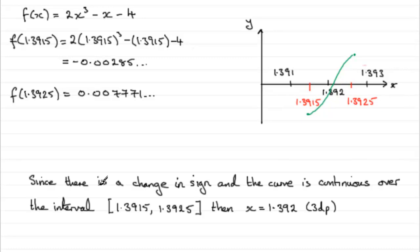So I've written that out here for you. Since there is a change in sign and the curve is continuous over the interval 1.3915 to 1.3925, then x must equal 1.392 to three decimal places.